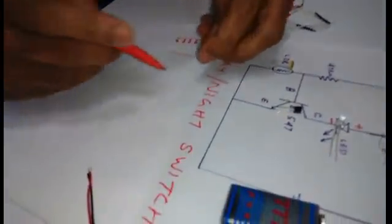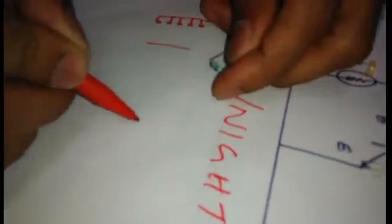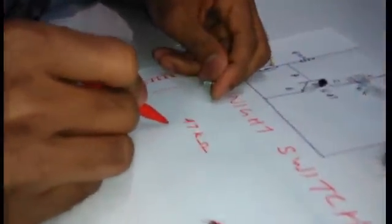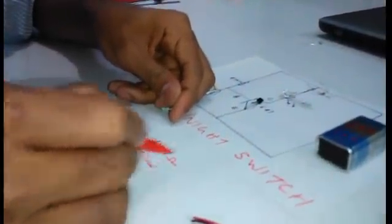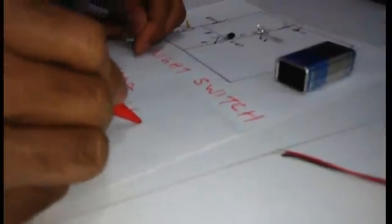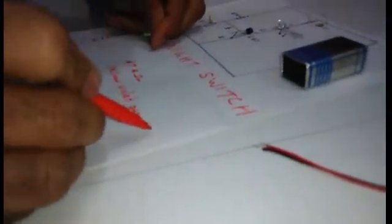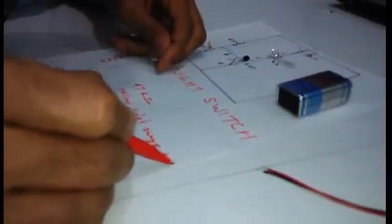Now let us see the color code to identify the resistors. This 47 kiloohm resistor has the color coding: yellow, violet, orange, gold. So this is the 47K resistor.